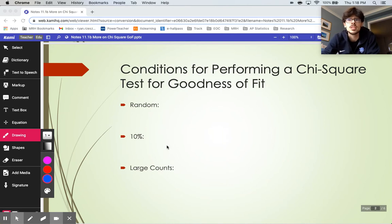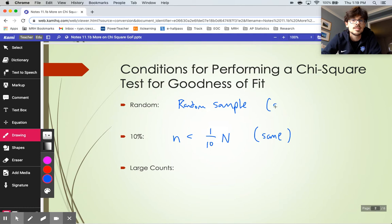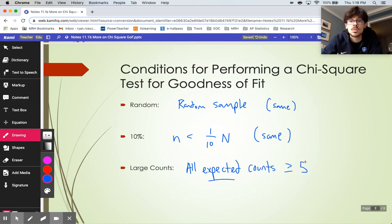The random condition and the 10% condition work the same as they always do. You need to have a random sample. Here we just have one group, so it's just a single random sample that we're looking at. Your 10% condition works the same as it always does - your sample is less than 10% of the overall population. And then the large counts condition, what you're going to do is say that all of your expected, not observed, but expected counts are greater than or equal to 5.